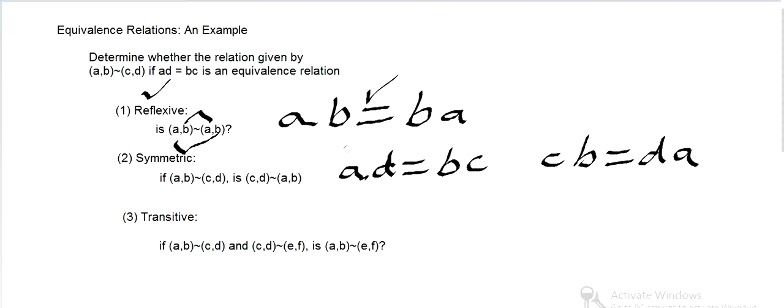And you can see that this is just written in reverse order. AD equals BC. We can flip that around to CB equals DA. And so that's certainly true if we're dealing with real numbers.